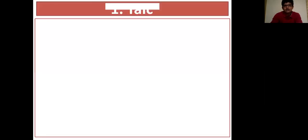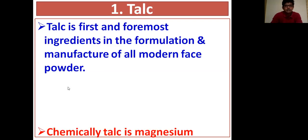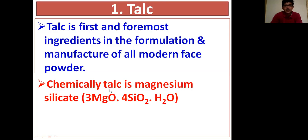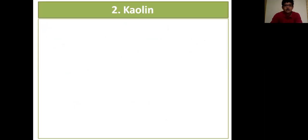The first ingredient is talc. Talc is the foremost ingredient in the formulation and manufacture of all modern face powder. Chemically, talc is magnesium silicate. Its chemical formula is 3MgO · 4SiO₂ · H₂O. Its properties include easy spreadability and low covering power. The second constituent is kaolin.